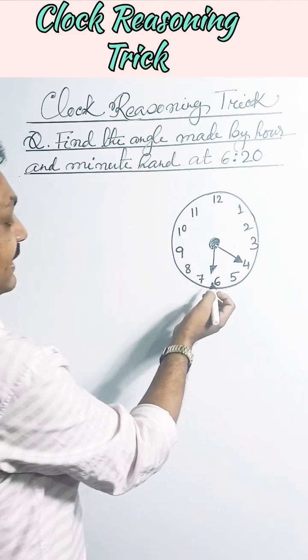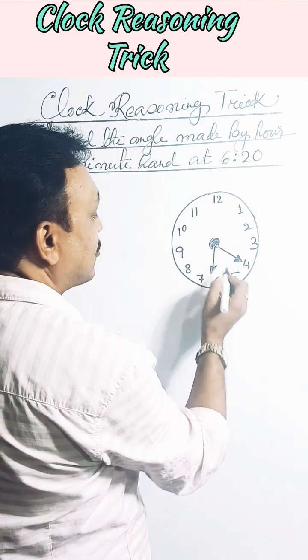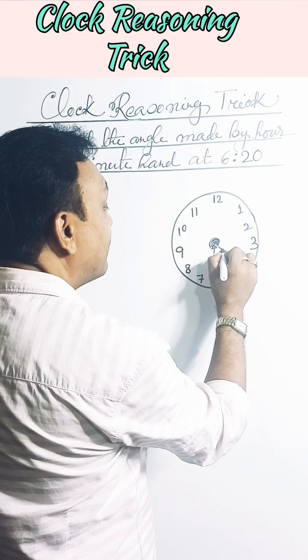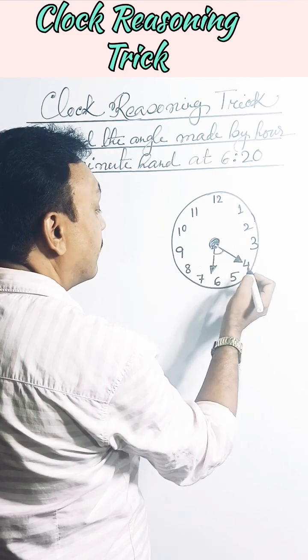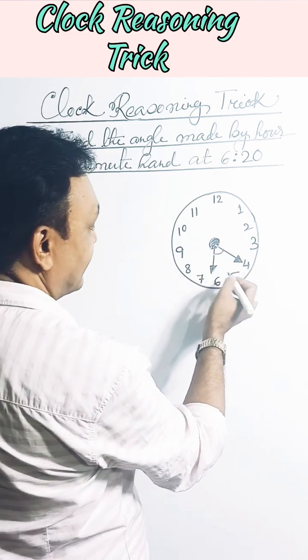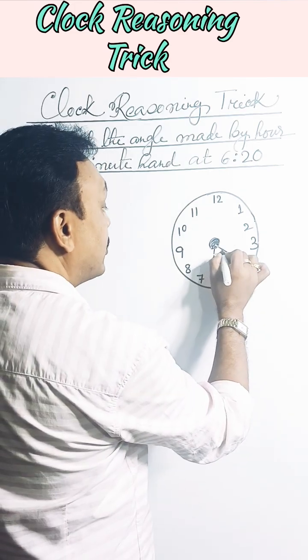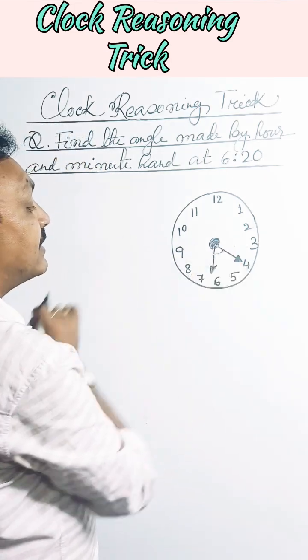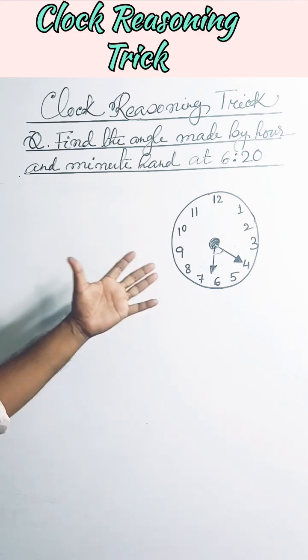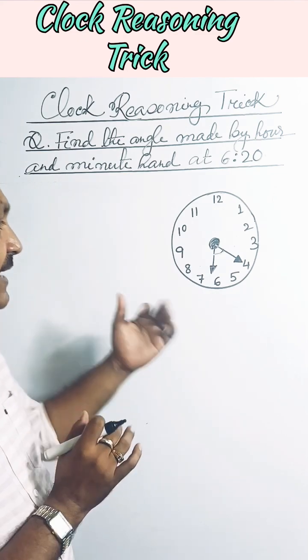Now see the clock, it is approximately 6:20. You have to find out the angle between these two hands - the hour hand and the minute hand. If this type of question is coming, then you have to remember one formula.